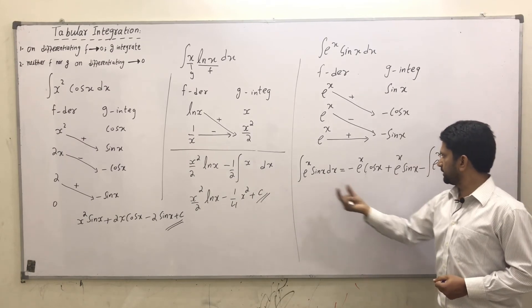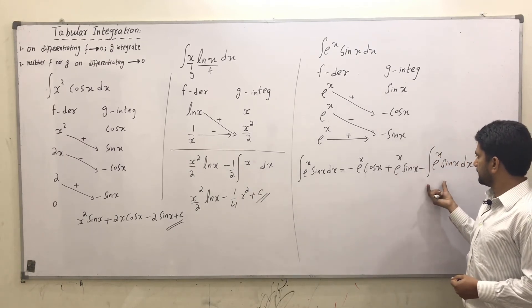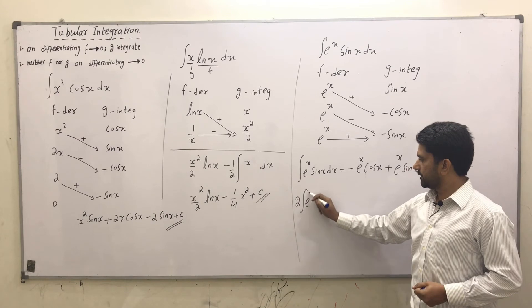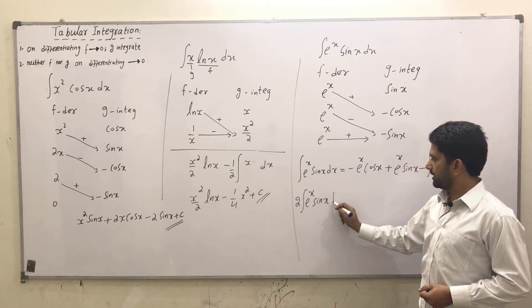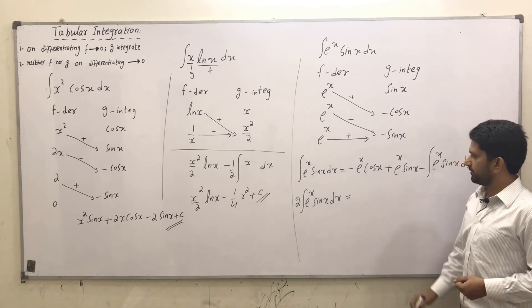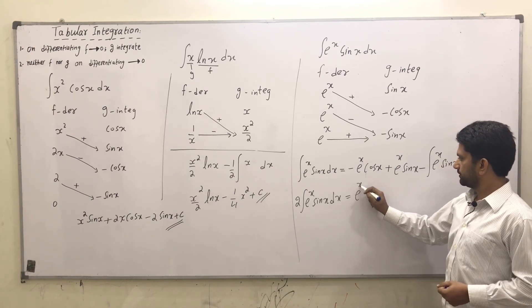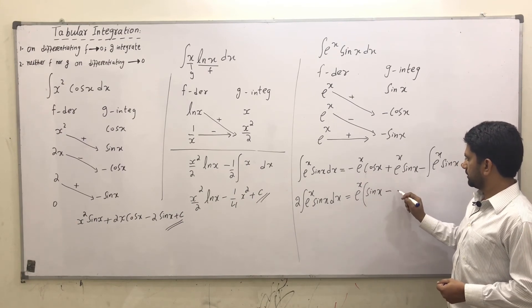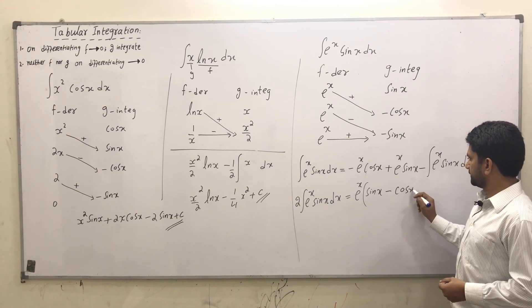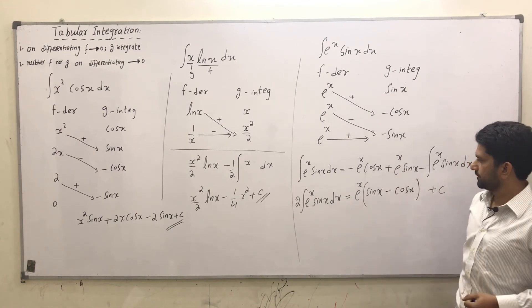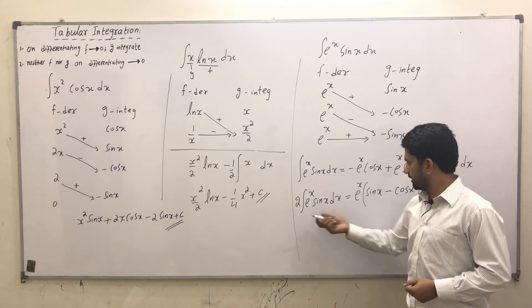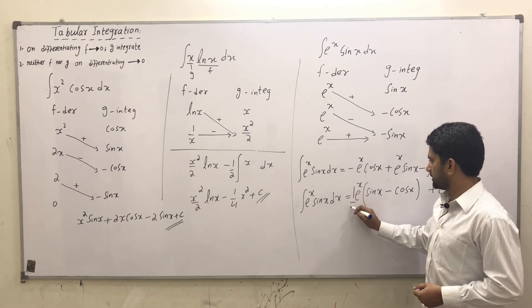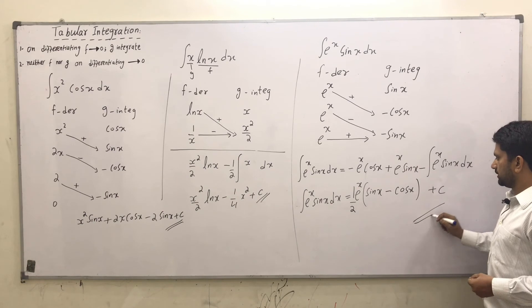We see that the integral term appears on both sides. On simplification, moving it to the left-hand side gives two times ∫eˣ sin(x) dx equals eˣ times (sin(x) minus cos(x)), plus a constant. Since 2 is multiplied on the left, dividing both sides by 2 gives us one-half as the coefficient, and this is our required solution.